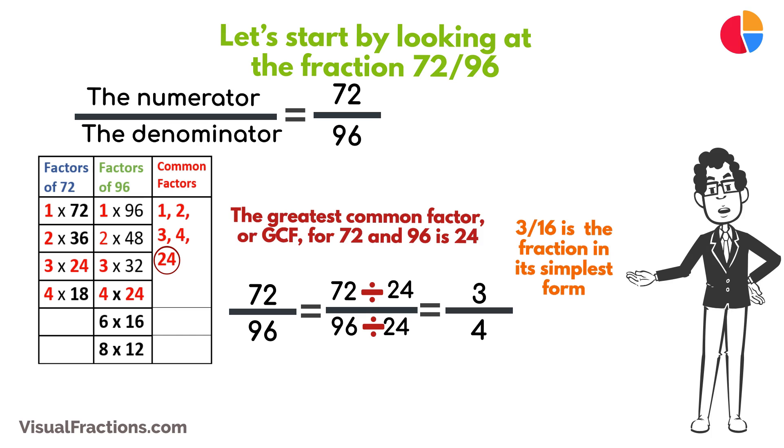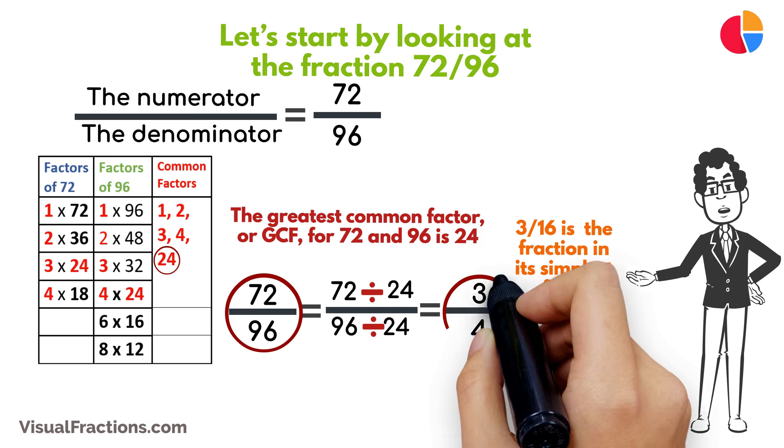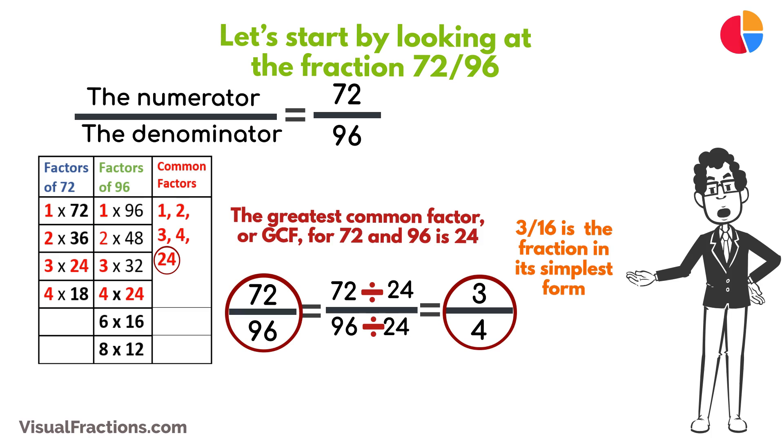It's interesting to note that both the original fraction 72/96 and the simplified fraction 3 quarters are equivalent in decimal form, which is 0.75. This shows that although their appearance may change, their value remains the same.